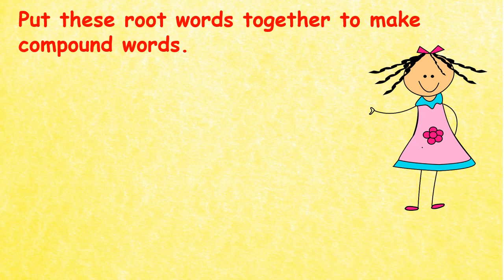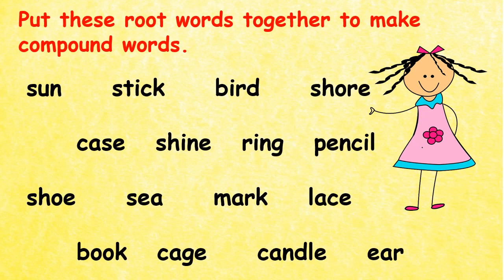I now have an activity for you. Put these root words together to make compound words. Here is a list of words — I'll read them for you and you can read them with me: sun, stick, bird, shore, case, shine, ring, pencil, shoe, sea, mark, lace, book, cage, candle. In your exercise books you are going to write compound words made from these words.